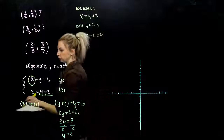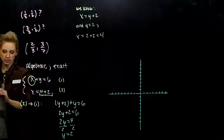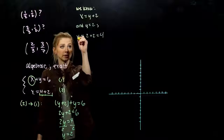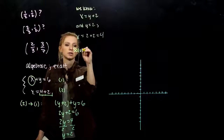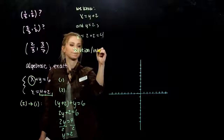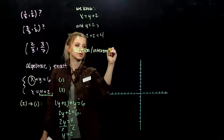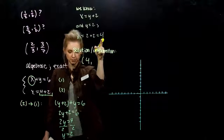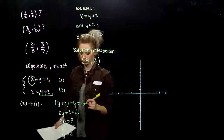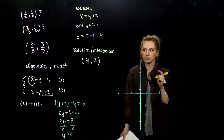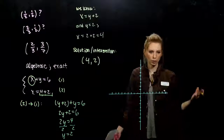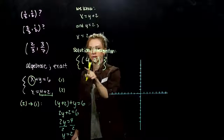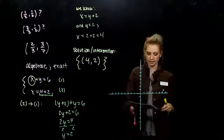Our solution — we have an x-coordinate and a y-coordinate, so we report it as a point. The intersection happens at the point (4, 2): x-coordinate comes first, y second. We have that one solution to the system. In set notation, we're talking about the set containing just that one point — only one point will satisfy both equations.